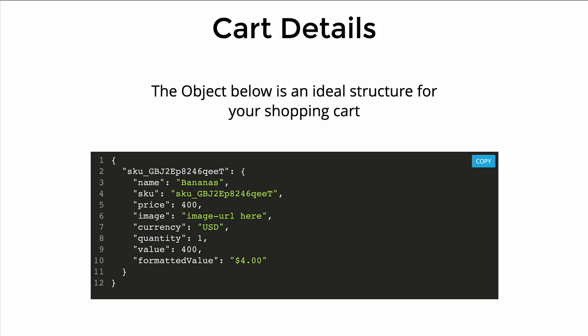I'd like to present to you cart details. This is what's actually being used under the hood with useShoppingCart. It has the information you need — it's the ideal structure for your shopping cart and e-commerce experience. You can see we've got the name of the product, bananas, a SKU and a SKU ID which is interchangeable with Stripe's price ID. The name of the object is the same as the SKU ID, which ensures there's no data colliding within the cart. We also have price, image URL, and a formatted value formatted for the country or language you need.